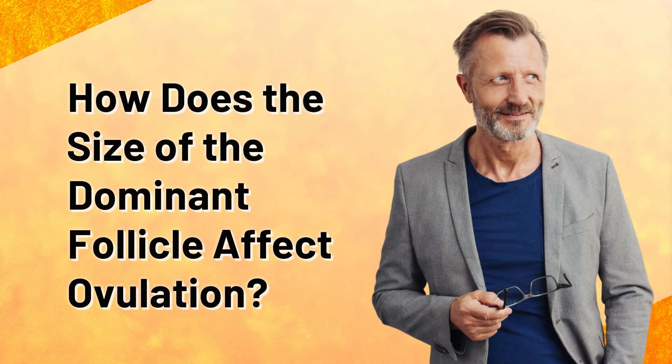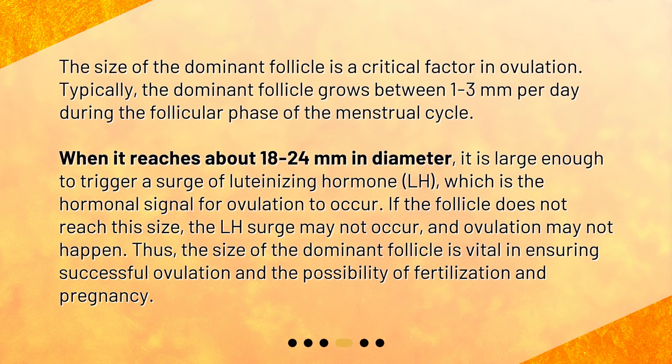How does the size of the dominant follicle affect ovulation? The size of the dominant follicle is a critical factor in ovulation. Typically, the dominant follicle grows between 1 to 3 mm per day during the follicular phase of the menstrual cycle. When it reaches about 18 to 24 mm in diameter, it is large enough to trigger a surge of luteinizing hormone, LH, which is the hormonal signal for ovulation to occur. If the follicle does not reach this size, the LH surge may not occur, and ovulation may not happen. Thus, the size of the dominant follicle is vital in ensuring successful ovulation and the possibility of fertilization and pregnancy.